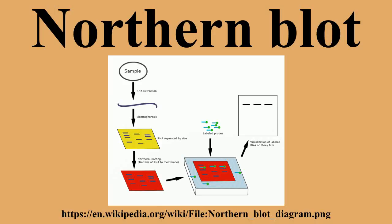After a probe has been labeled, it is hybridized to the RNA on the membrane. Experimental conditions that can affect the efficiency and specificity of hybridization include ionic strength, viscosity, duplex length, mismatched base pairs, and base composition.